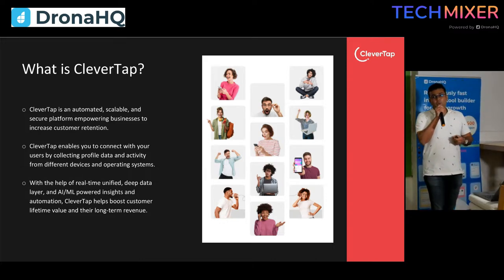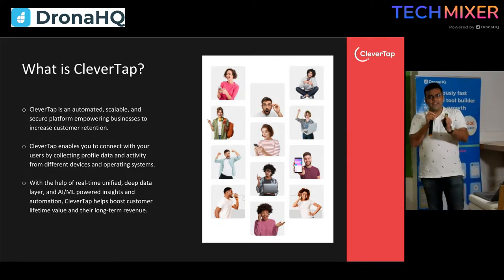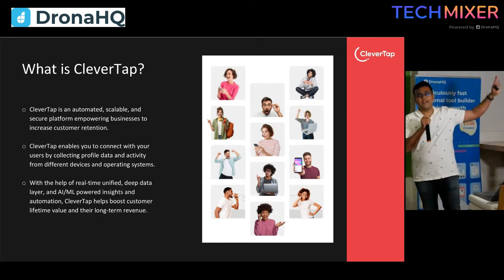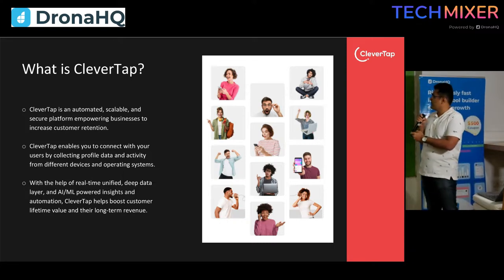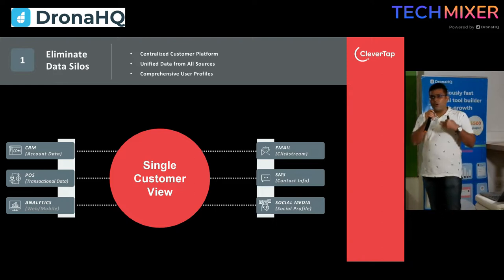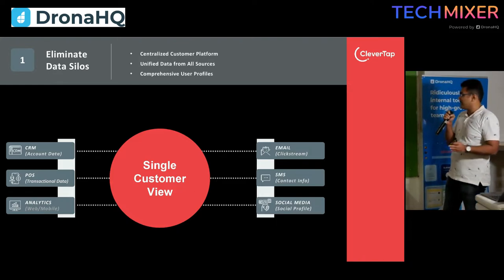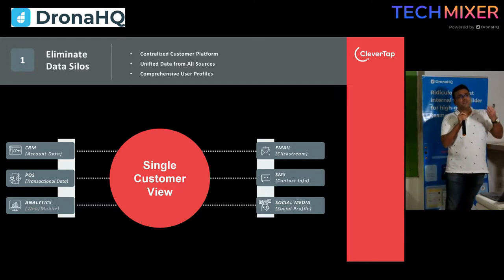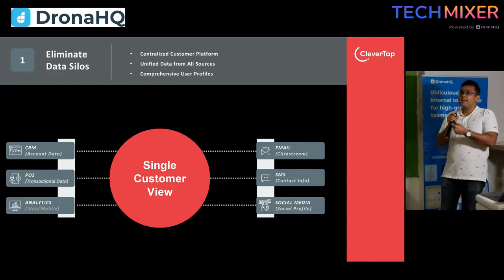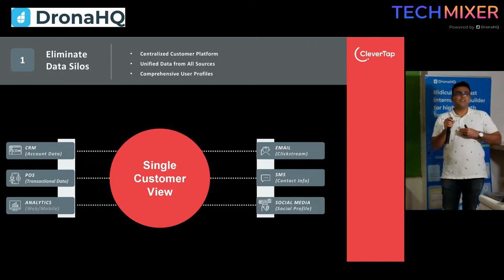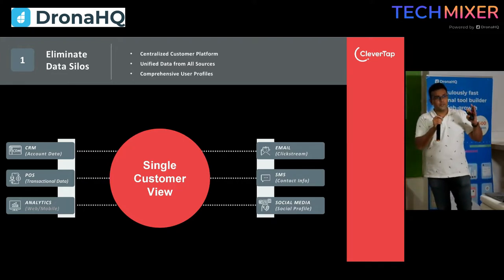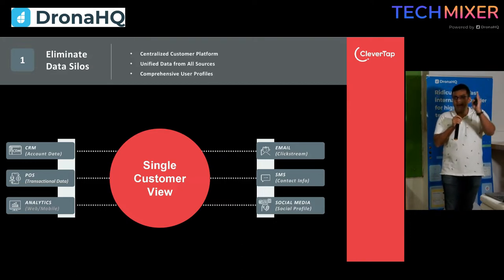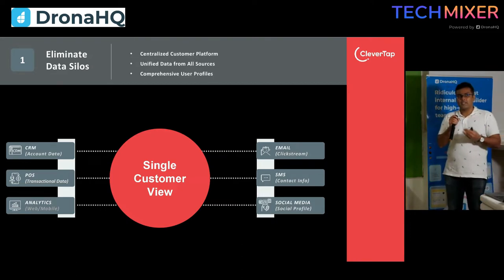One single thing most marketers have trouble with is identifying a user as a single user. For example, you have some people targeting via email, some via SMS, some via a third channel. You need one way wherein all the different channels have a single customer view. Many of us have experienced getting an SMS, an email, and a push notification within a span of five minutes — that's a terrible experience because you don't want to be spammed. But if you have a single customer view and can orchestrate this better, that is something you would definitely want.